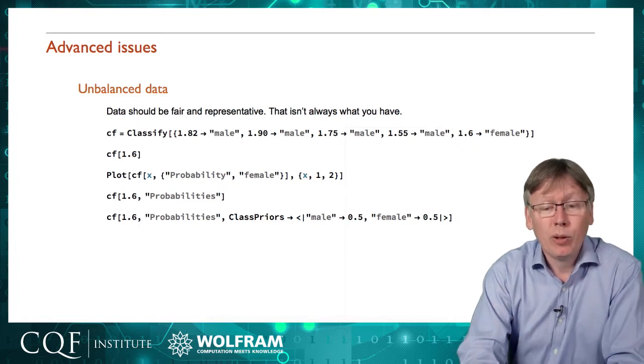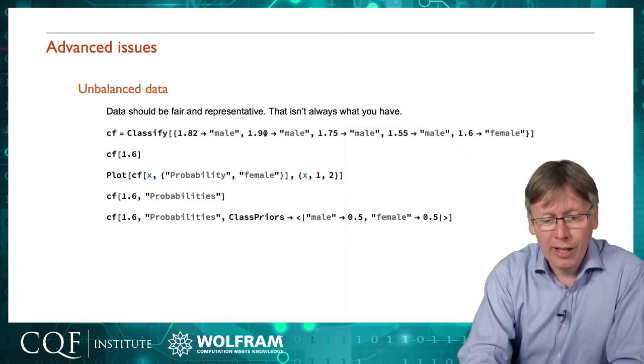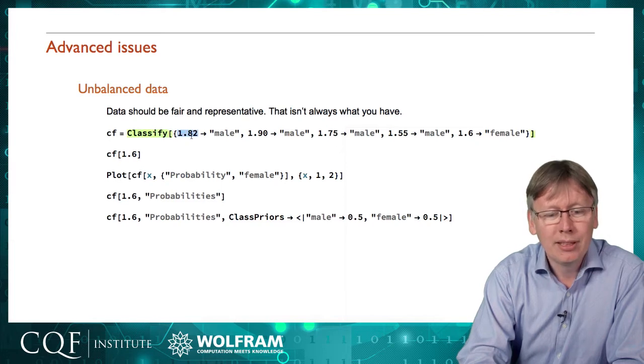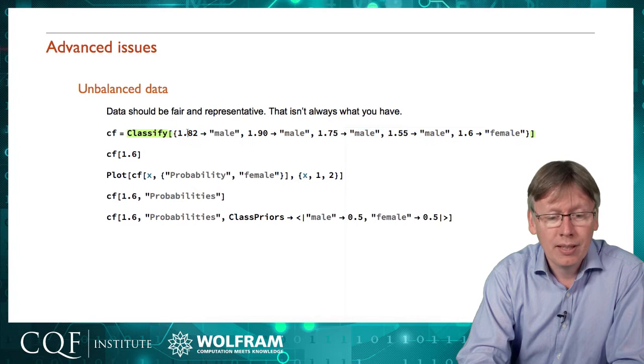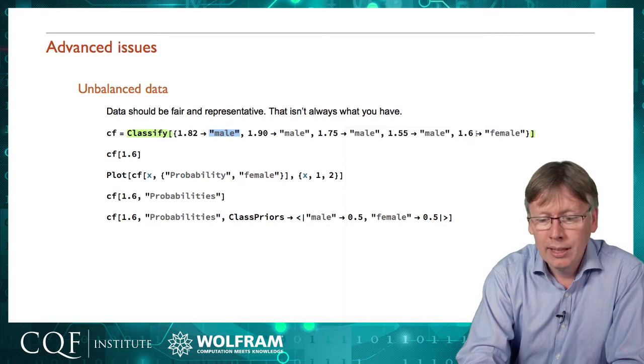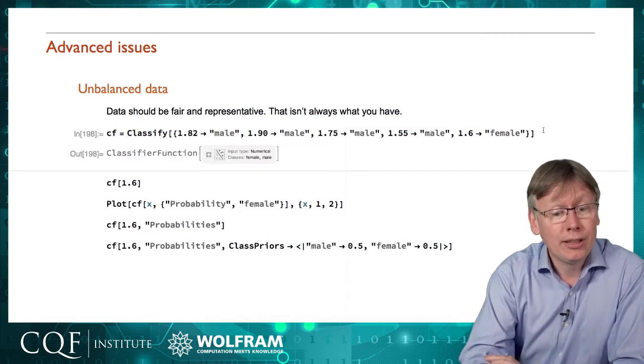I'm going to illustrate it first of all with an example which will give a fairly poor prediction. So this is perhaps trying to predict somebody's sex from their height. We've got a data point here of a 1 meter 82 person who is male and we've got some more examples and a 1 meter 60 person who's female and I'll ask it to classify that just as I did before.